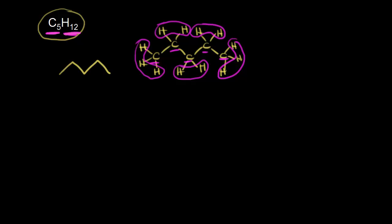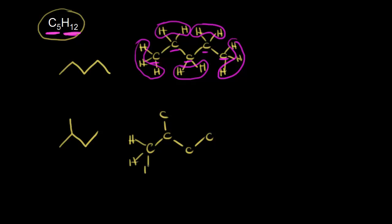Let's draw another structural isomer with the same molecular formula. Instead of drawing five carbons in a chain, now we draw four. We start with four carbons, and we need to show the fifth carbon branching off of our chain. Let's draw in those five carbons. Carbon on the left has three hydrogens, three hydrogens on the top carbon, only one hydrogen on the branching carbon, two hydrogens on the next one, and finally three hydrogens on the last carbon.